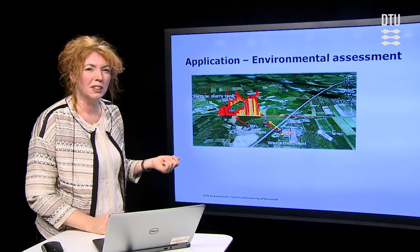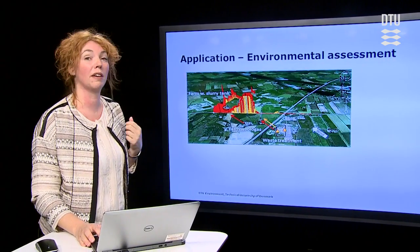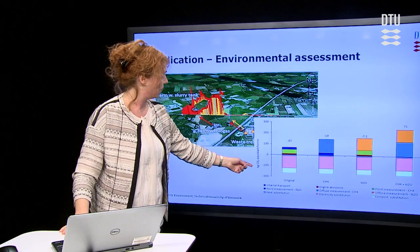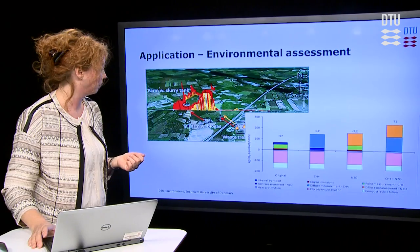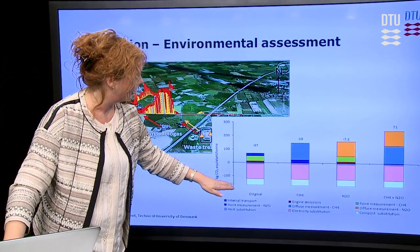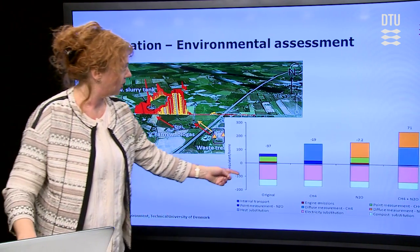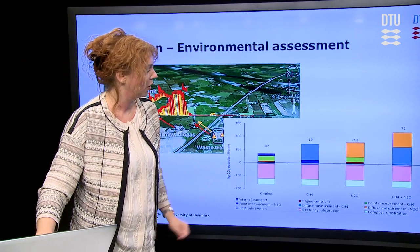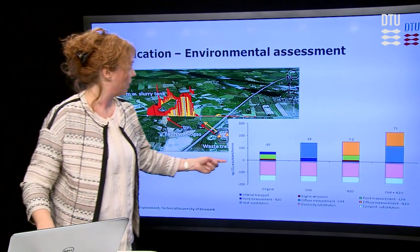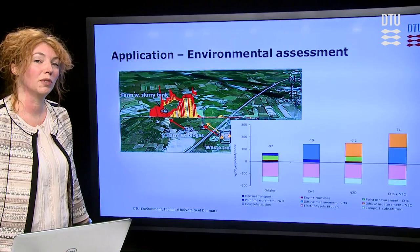So is this of any importance at all? In order to answer that, we did an environmental assessment of the plant using life cycle assessment. I'll show you the results in terms of global warming impact measured as kilograms of CO2 equivalent per ton of input material to the plant. Everything given as negative numbers represents the benefits or savings to the environment — such as biogas and compost generated, which can replace fossil fuel and mineral fertilizer. Whereas everything above is a load to the environment, and this mainly consists of these diffusive greenhouse gas emissions.